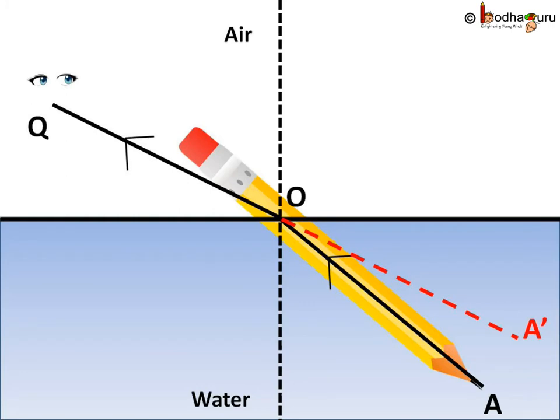But our eyes which is in the air follows a straight path. So if we extend the line OQ coming to our eyes backwards in the water as shown by the red dotted line A dash O, it appears as if the light ray is coming from the point A dash. That is our eyes see the image of the tip of the pencil at point A dash instead of A.